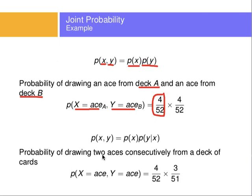Now, the probability of drawing two aces consecutively from a single deck of cards is a different question. The probability of drawing the first ace is 4 over 52. However, if I draw an ace from this deck and then try to draw another ace, I will only have 3 aces left and 51 cards. The probability of getting a second ace given that I already got the first ace would be 3 over 51.